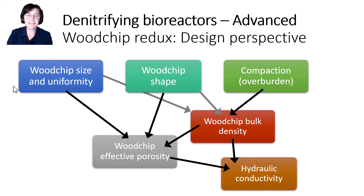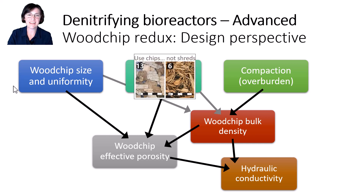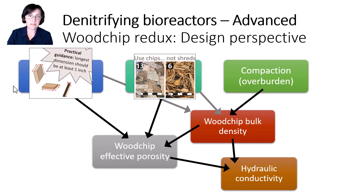I made this graphic to help illustrate some of these linkages for us. Based on current knowledge, we're looking for rectangular chip-shaped woodchips where the longest dimension is at least an inch. But how do we actually operationalize these desirable characteristics in bioreactor design work? We'll mainly talk about woodchip porosity and saturated hydraulic conductivity, which you've heard me mention before.